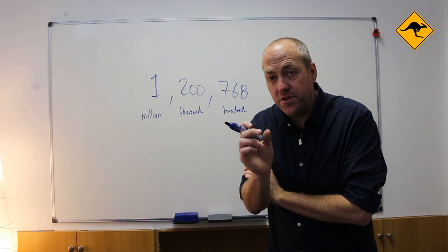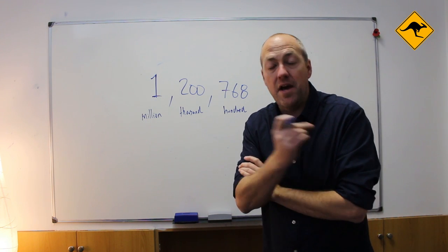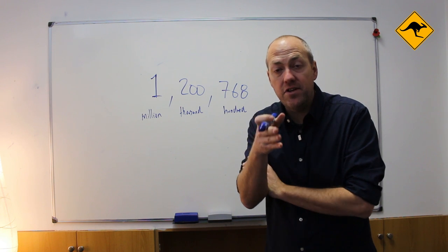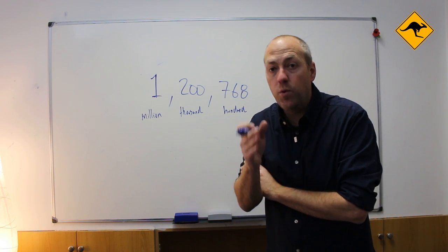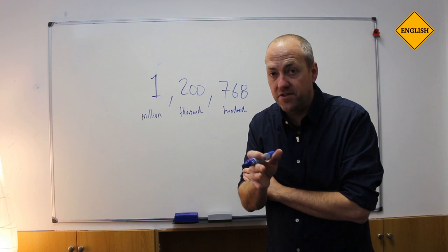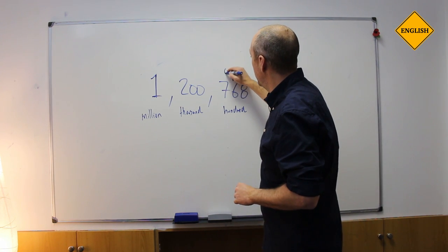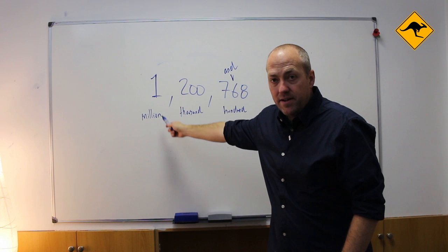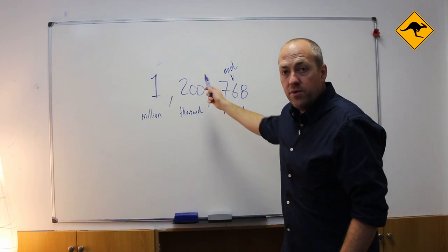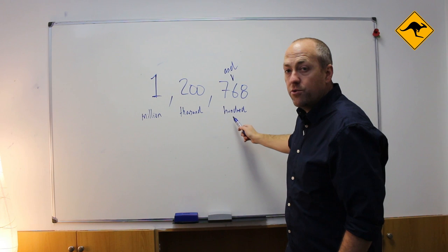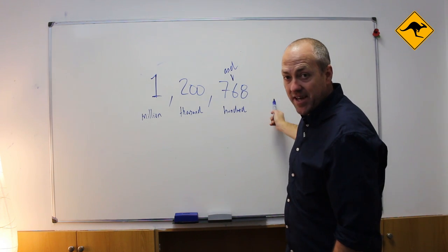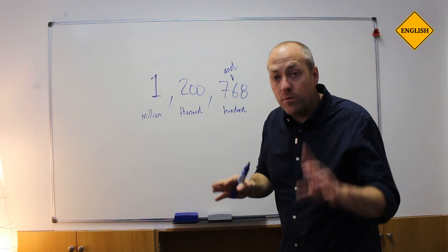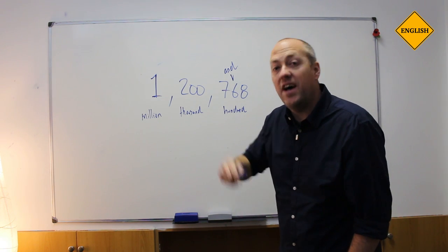Now there is a little difference between British English and American English. In British English we insert an 'and' with the numbers that are hundreds here. So, one million two hundred thousand seven hundred and sixty-eight. But this is an even number. If it was not even, we would put another 'and': one million two hundred and ten thousand seven hundred and sixty-eight.